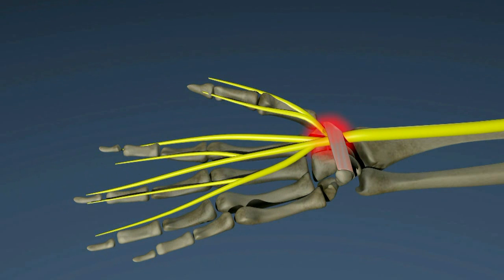Sometimes the space in the tunnel becomes too small for the nerve. The nerve is compressed and irritated. When it is irritated, it may not function properly.